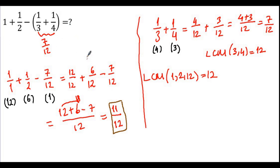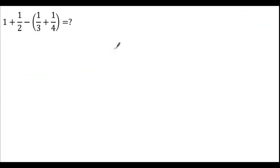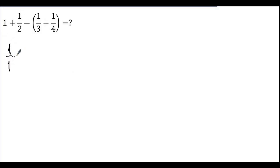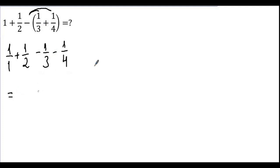I'm going to solve this question a different way. Instead of 1 I'll write 1 over 1 plus 1 over 2, and distribute this minus: negative 1 over 3 minus 1 over 4. The denominators are not the same, so we find the LCM of 2, 3, and 4, which is 12, and make all denominators 12.